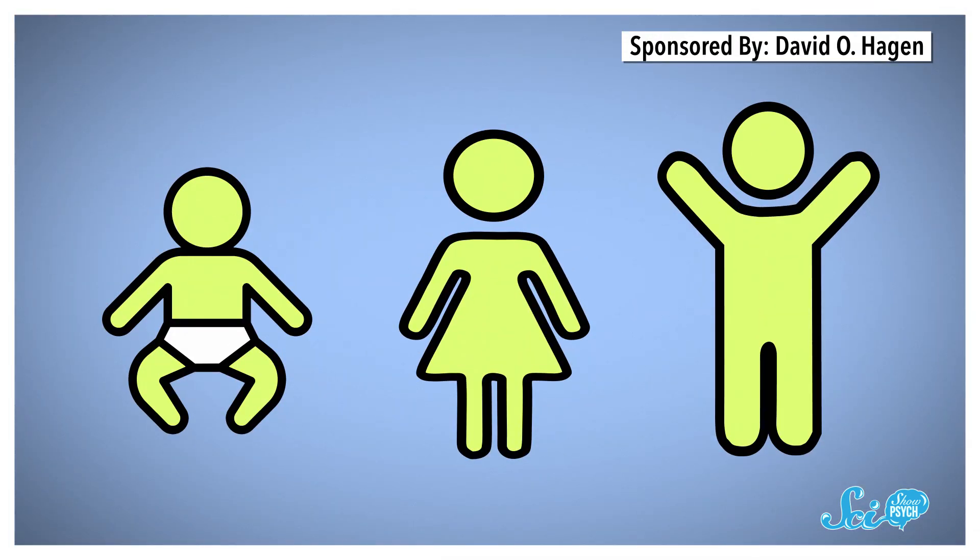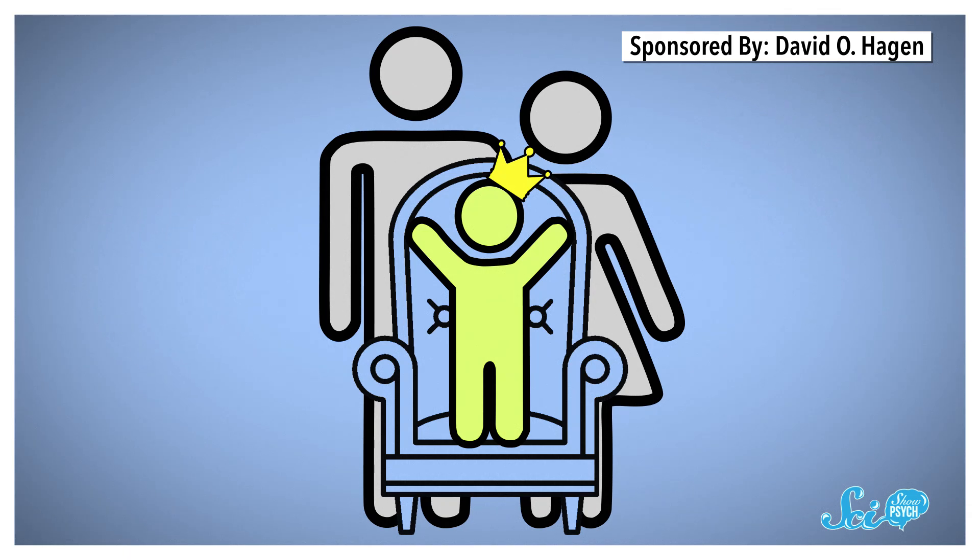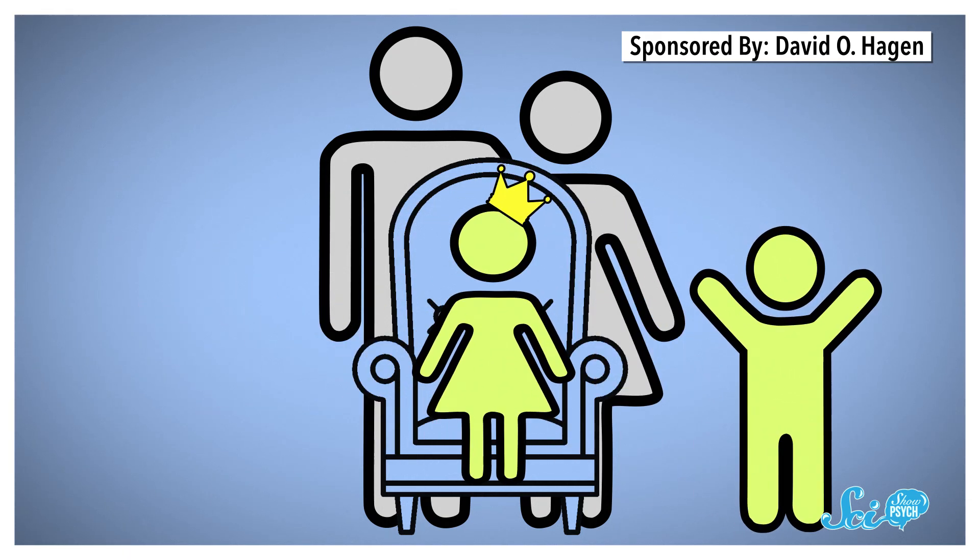Adler took it one step further and argued that a child's position in their family would have a big impact on their development, because each kid would experience a different psychological environment. In his writings, he theorized that the firstborn child starts out as the spoiled only child and is basically dethroned when the next sibling comes along.